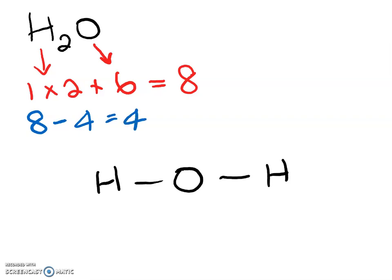So I still have four more electrons to assign to my molecule. Hydrogen is one of the exceptions — a hydrogen atom only has two electrons around it, and since it's already in a bond, it does not need any extra electrons. So those four extra electrons I'm going to put on my central oxygen atom.